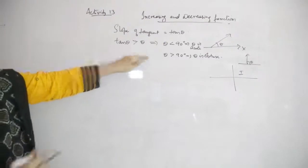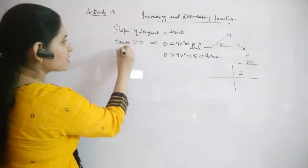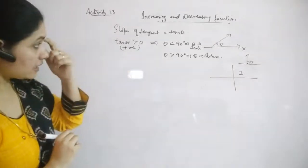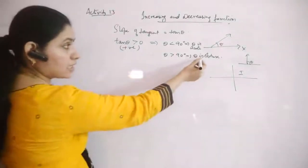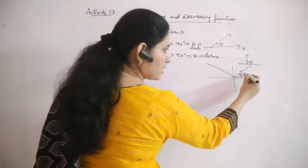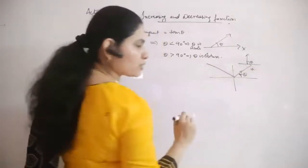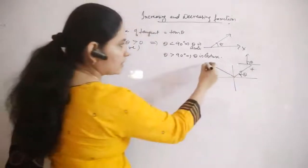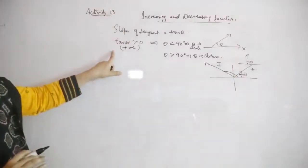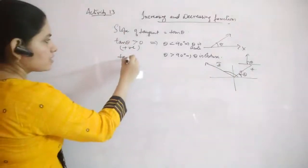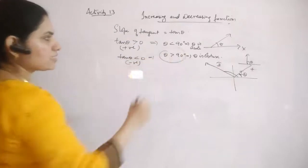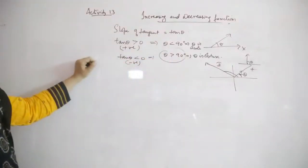When θ is greater than 90°, it is an obtuse angle. In the second quadrant, tan θ is negative — so you get tan θ less than 0, meaning the slope is negative when θ is obtuse.